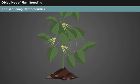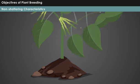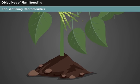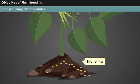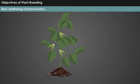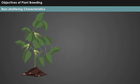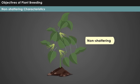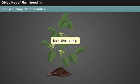Non-shattering characteristics: Shattering is a major problem experienced by many commercial crop varieties. Inducing non-shattering characteristics through plant breeding is of great value to crops like mung.